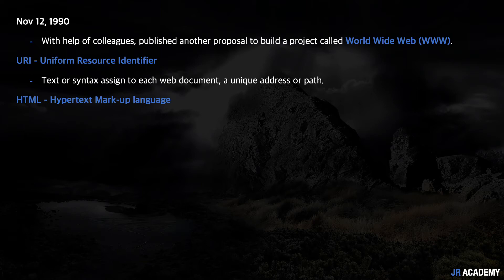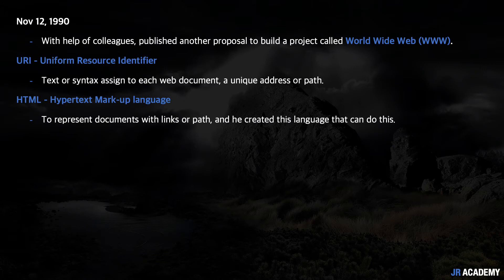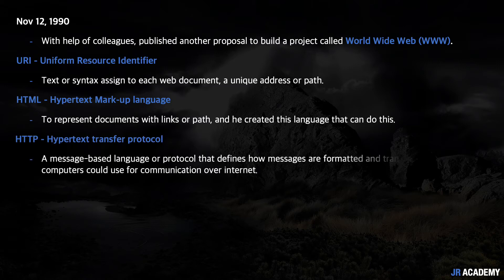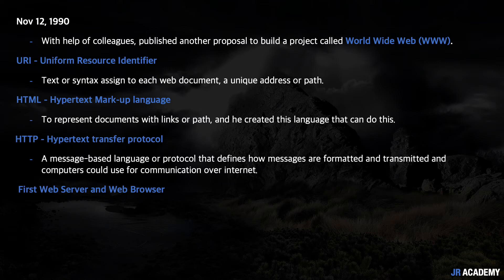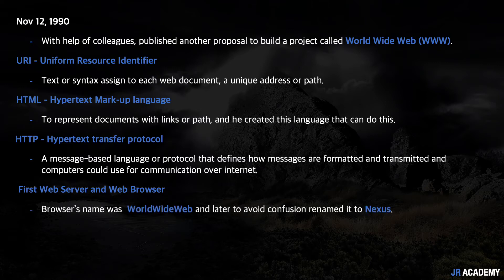The second invention was HTML — HyperText Markup Language. Web resources can be in any form like video, text, or audio, but web pages are mainly text. To represent documents with links and paths, he created this language. The third was HTTP — HyperText Transfer Protocol — a message-based language or protocol that defines how messages are transformed and formatted, enabling computers to communicate over the internet. He also invented the web server and web browser.